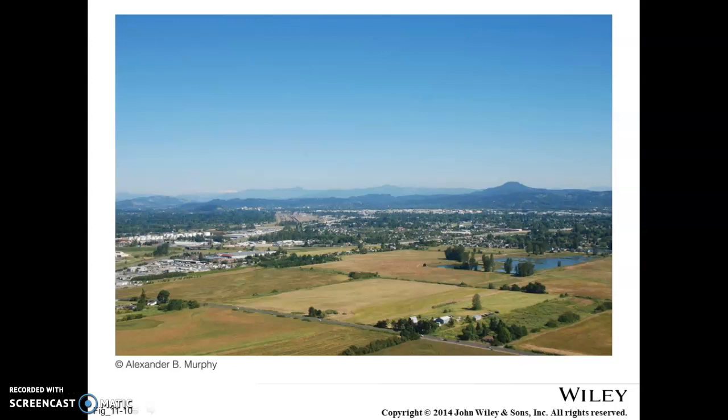We're going to start with what the imprint of agriculture looks like on the cultural landscape. Remember that cultural landscape is what we do — how we alter the landscape to reflect the things that are important to us. Agriculture is incredibly important, so it has had a significant imprint on the cultural landscape: the patterns in the land, how we mark land off, how we choose to set up towns around agriculture, and the survey systems all have an impact.